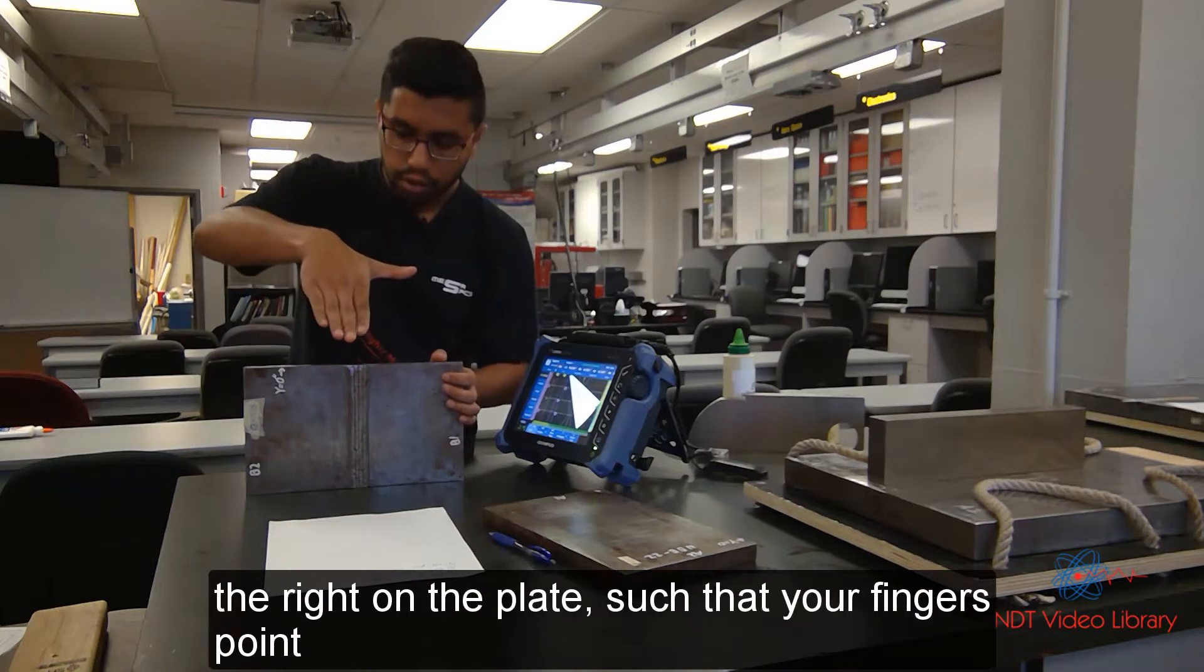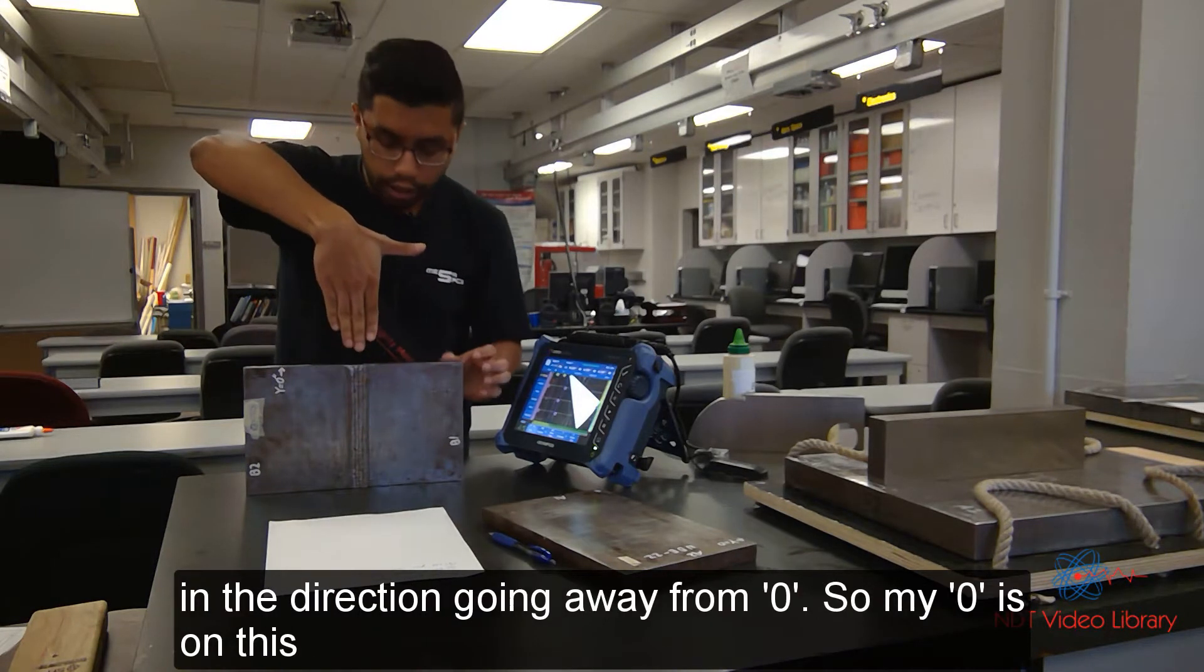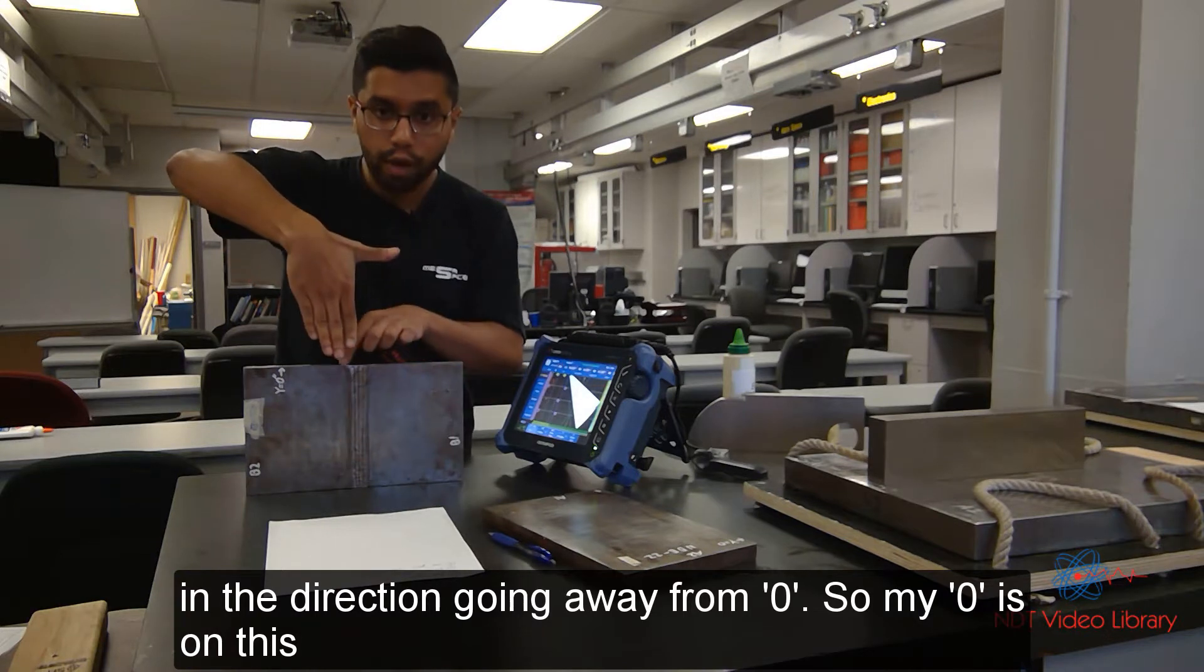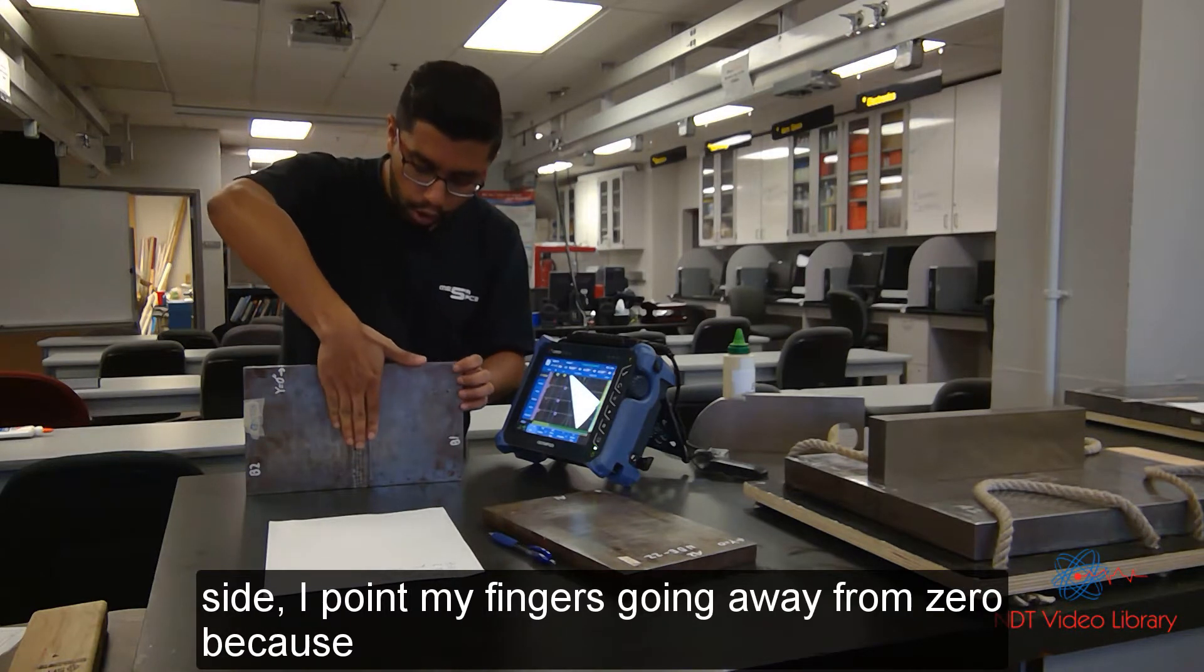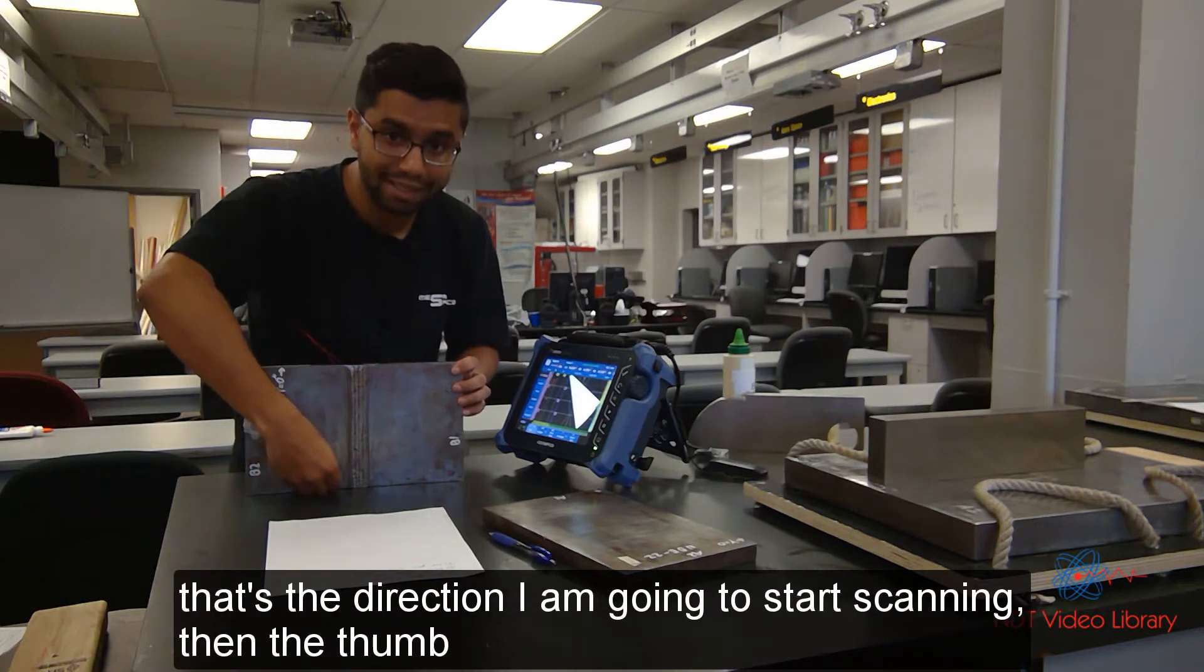Place the right hand on the plate such that your fingers point in the direction going away from zero. So my zero is on this side. I point my fingers going away from zero because that's the direction I'm going to start scanning.